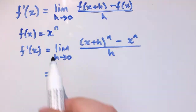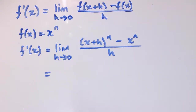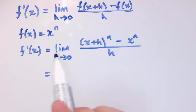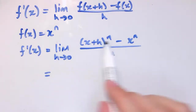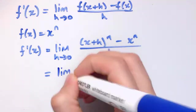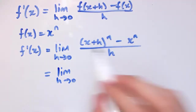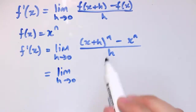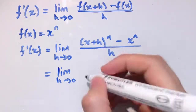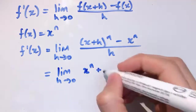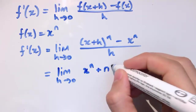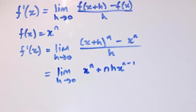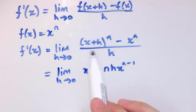It's not too much harder to do this for xⁿ, thinking of n as a positive integer. For xⁿ, the derivative is the limit as h tends to 0 of (x+h)ⁿ minus xⁿ over h, exactly as for x² and x³. Using the binomial expansion, we get xⁿ + n·h·x^(n−1) as the first two terms.